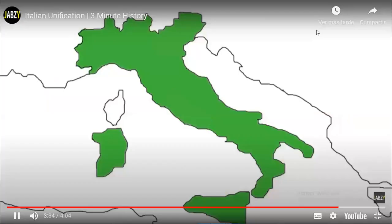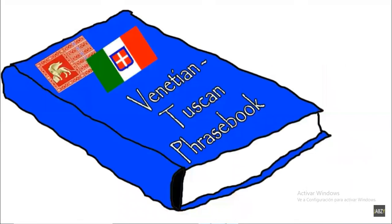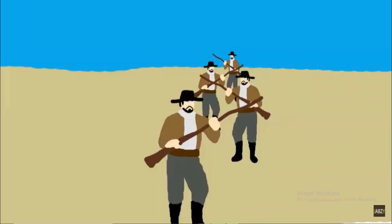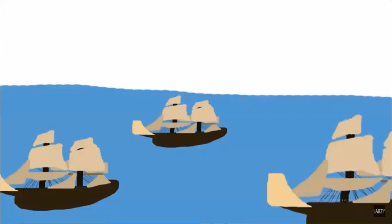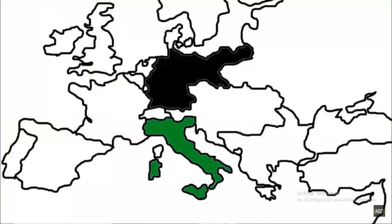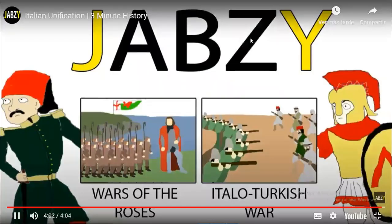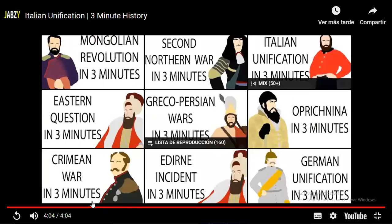Rome was declared the capital of the Kingdom of Italy, but the new nation faced many problems. Only a small number of the population spoke the standardized language, and the north and south were economically and culturally very different. Brigands in the south attacked northerners, and after land reforms, millions emigrated. On the global scene, Italy went on to create its own empire, but along with Germany, greatly upset the balance of power in Europe — and the alliances created as a result would help start World War One.